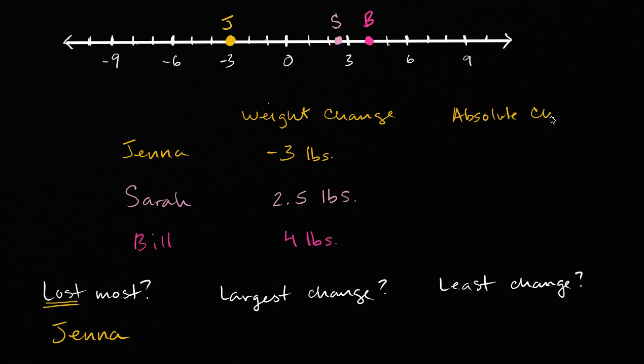Absolute change is just going to be the absolute value. Absolute value of negative three is positive three. Absolute value of 2.5 is 2.5. Absolute value of four is just equal to four.